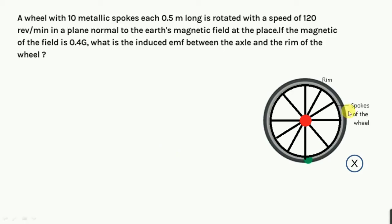In this question, there is a wheel with 10 metallic spokes and it is rotating from its center in a magnetic field which is 0.4 gauss. So you have to find the total EMF due to all spokes.